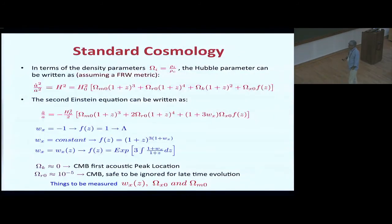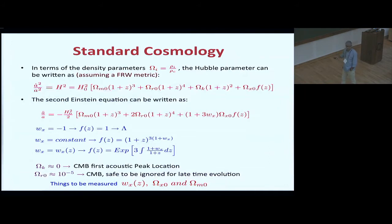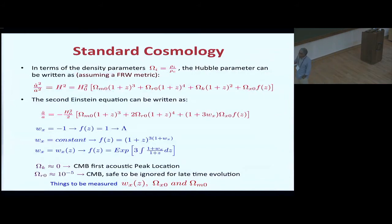In standard cosmology, defining the density parameter of any component as the ratio to the critical energy density, one Einstein equation gives the Hubble parameter H with matter, radiation, curvature, and an unknown dark component. A second equation determines the acceleration — to have positive acceleration with a negative sign, the equation of state parameter W_x for dark energy must be negative. If W_x equals minus one, the dark energy is just the cosmological constant Lambda. W can also be a constant, or any other functional dependence on redshift Z integrated to get the scaling function F(z).